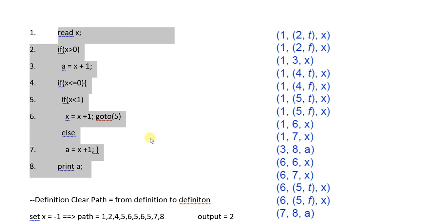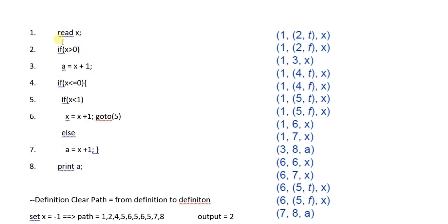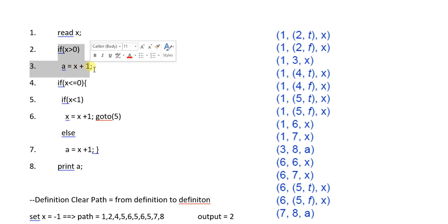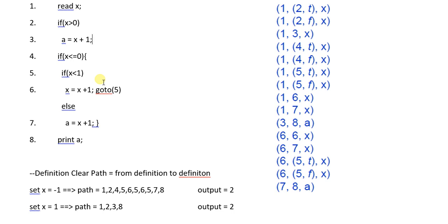Here in this code we have a total of eight statements, and we will choose a path which will cover all these statements. As it is obvious from the code, we cannot cover all these statements in a single path, because if this statement is true this block is not covered, and if we try to cover that block, statement number three is not covered. So we choose two paths.